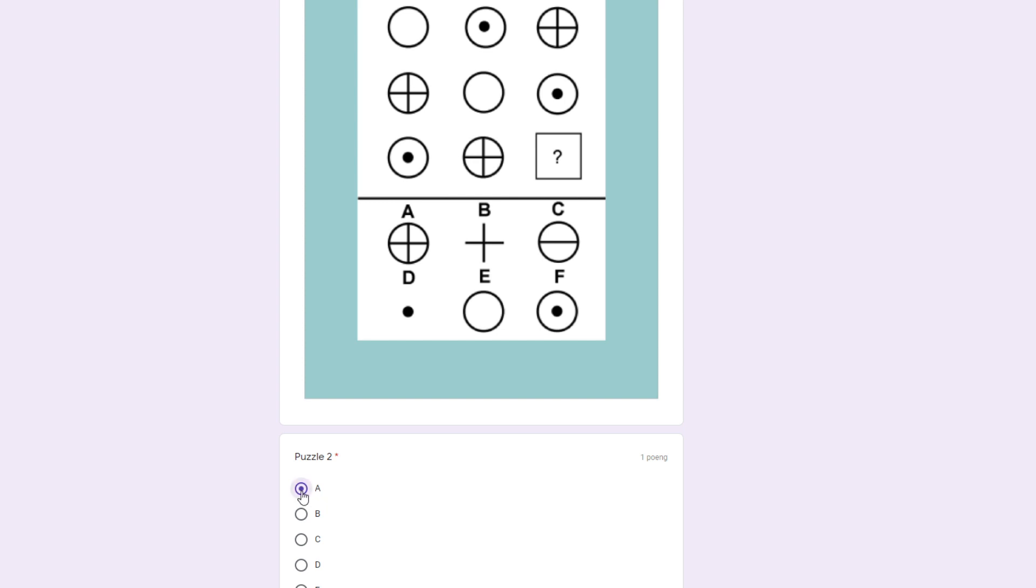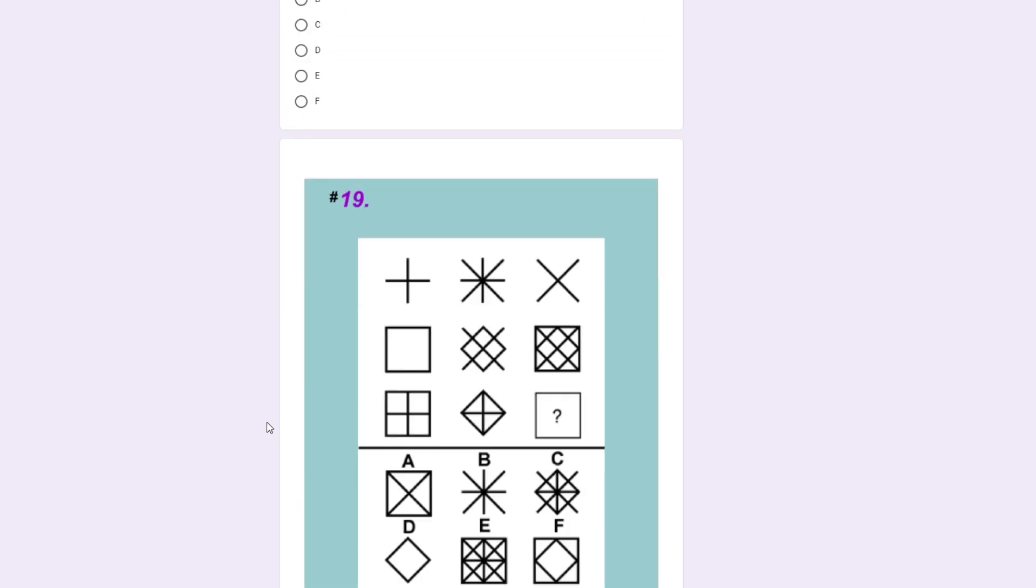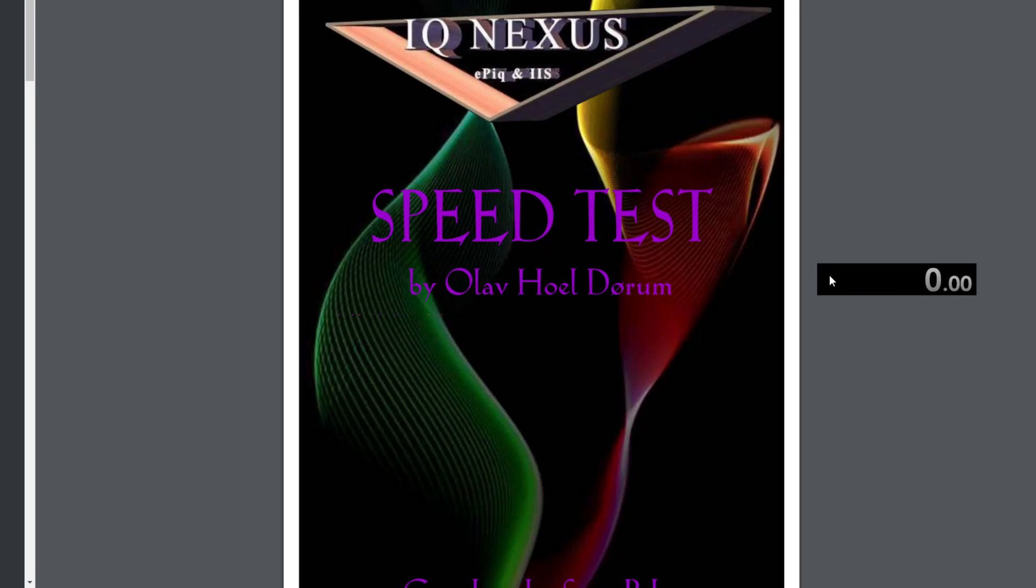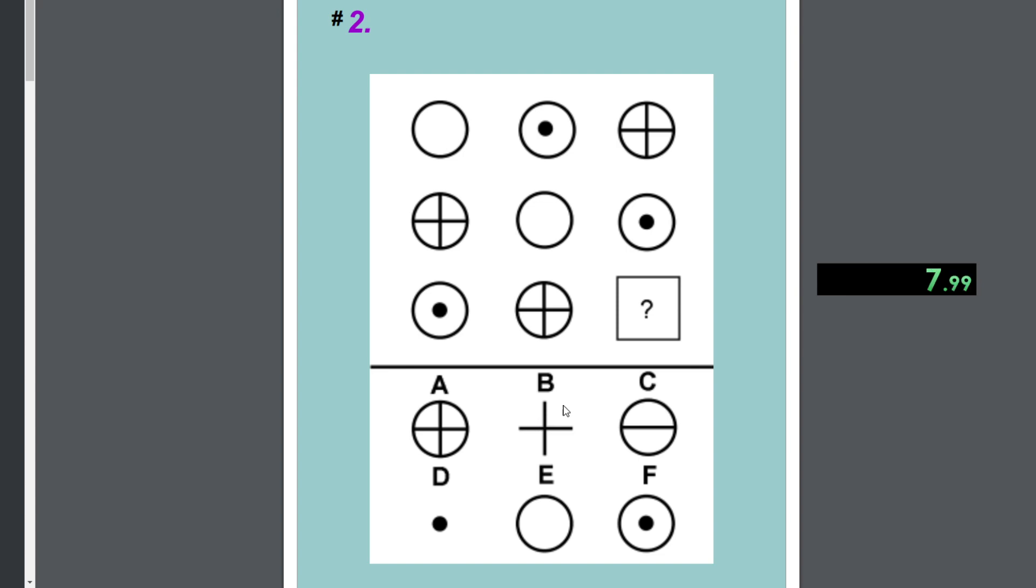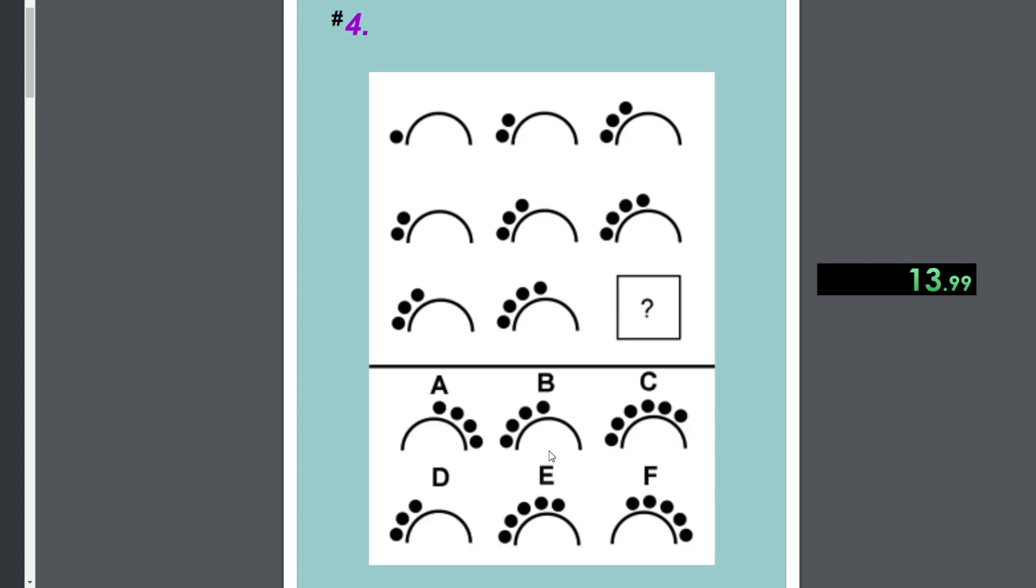Just to clarify, the answers on this form is what I think is correct, and I don't know if it's officially correct. Okay, let's start the test. Diagonal puzzle, B. Diagonal puzzle, E. Diagonal puzzle, B.